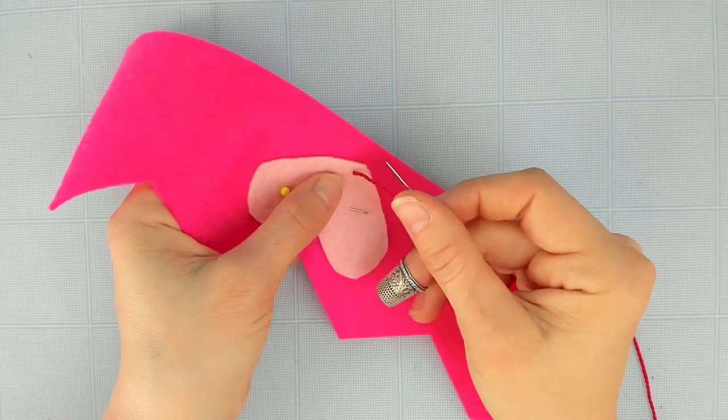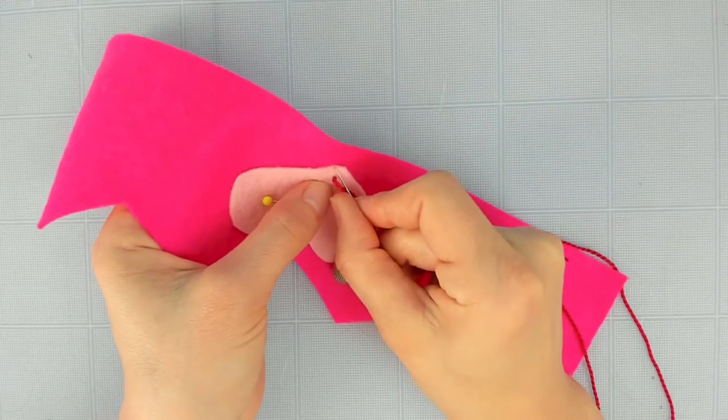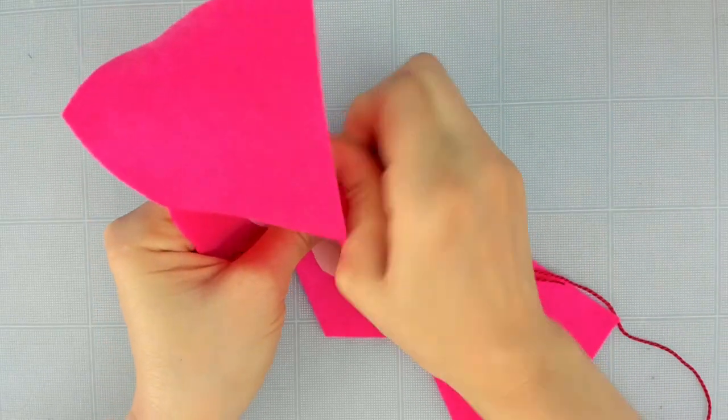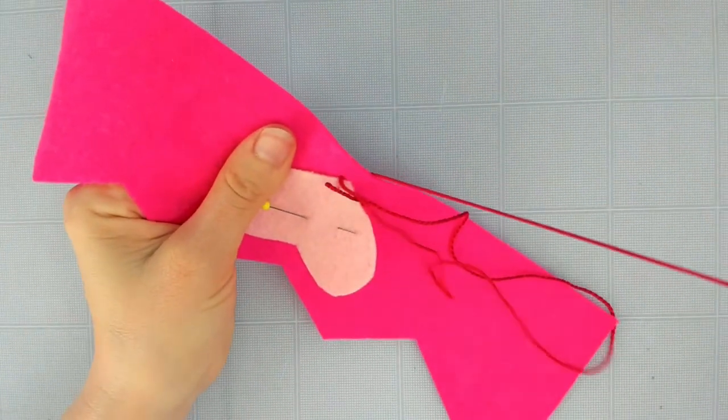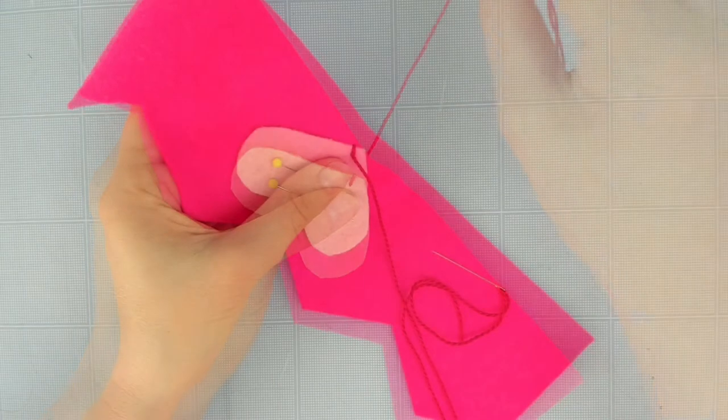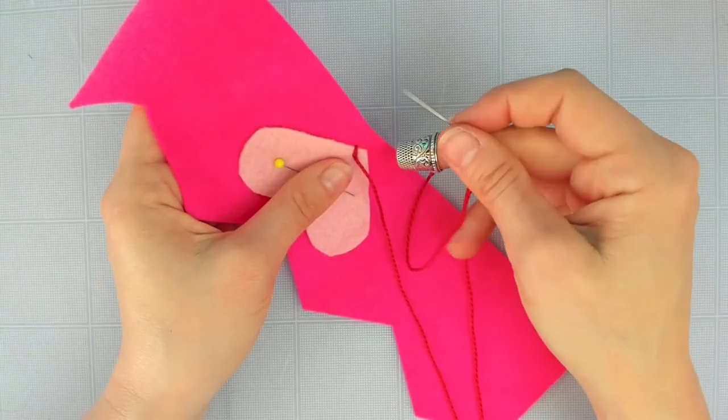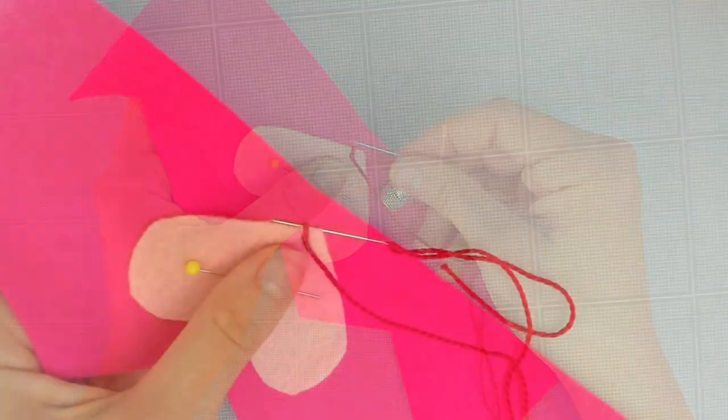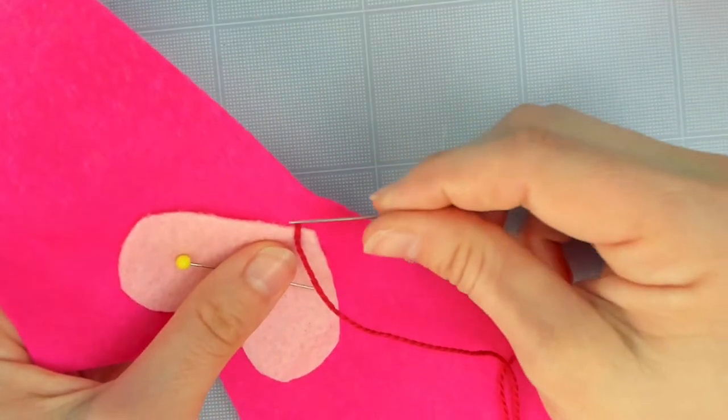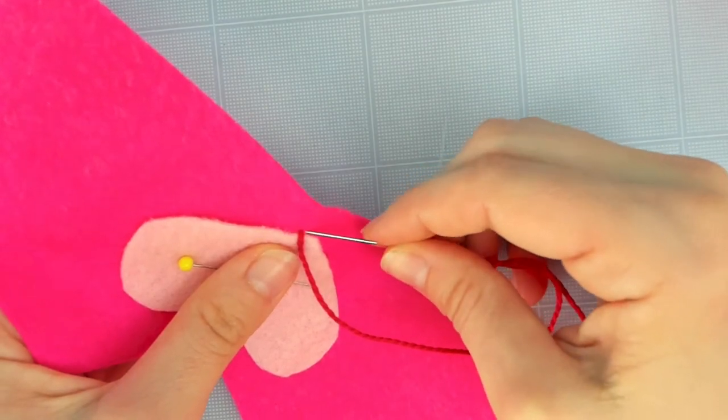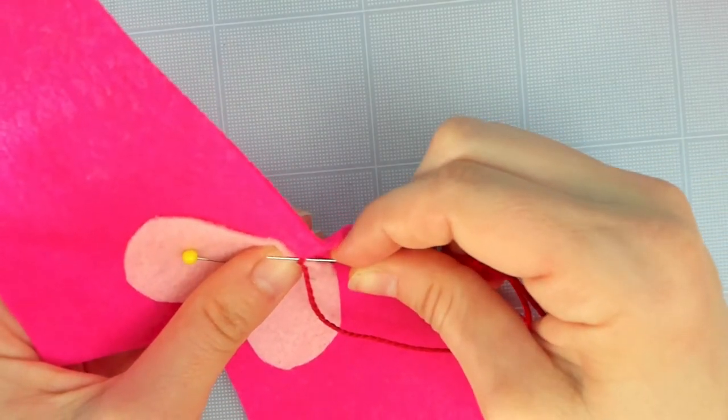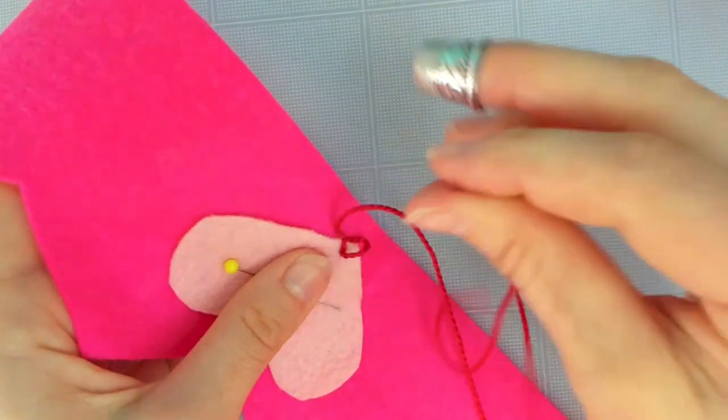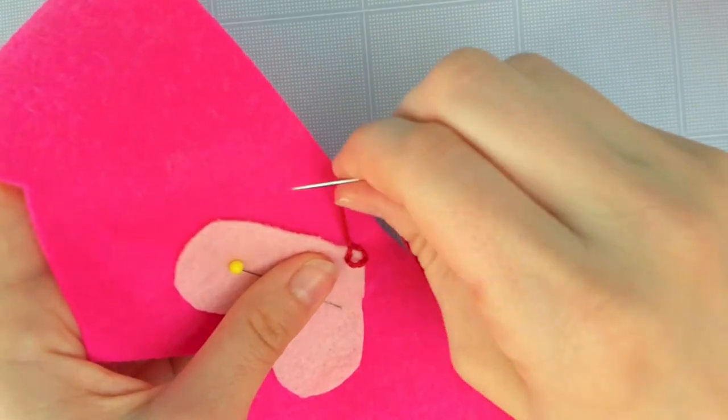For my next stitch I'm going to take my needle and I'm going to go straight through my dark pink. You're going to do two and a half stitches. So you're going to do your first stitch and then you're going to come right back up where you started. So the trick is to bring your needle right to the edge right here and put it under this stitch and make sure this loop lands right on top of your first stitch.